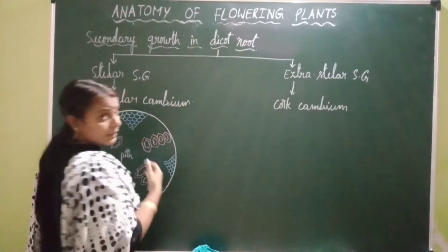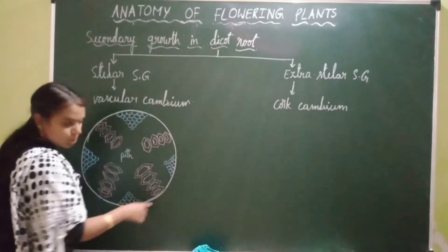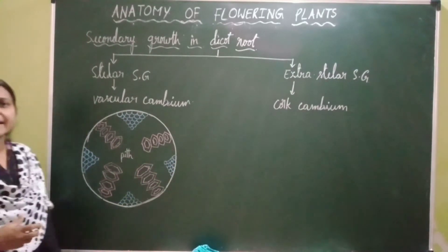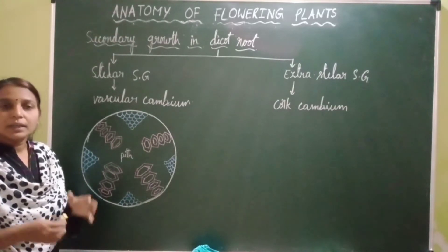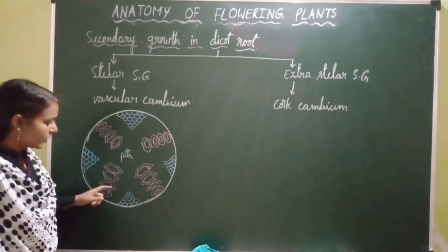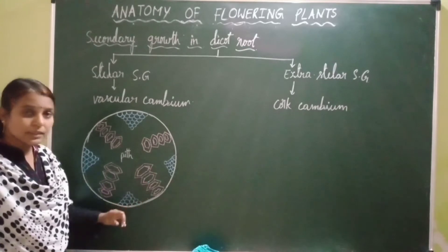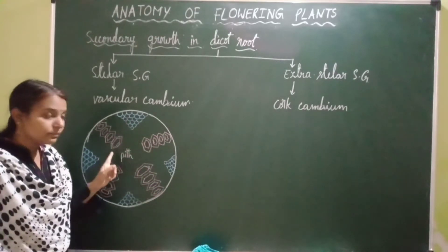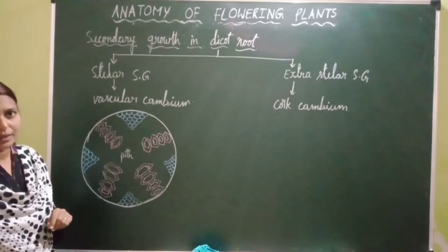Now let's start with stelar secondary growth. In dicot root, radial vascular bundles are present. In radial vascular bundles, xylem and phloem patches are present alternating with one another in two different radii — that is called a radial vascular bundle.